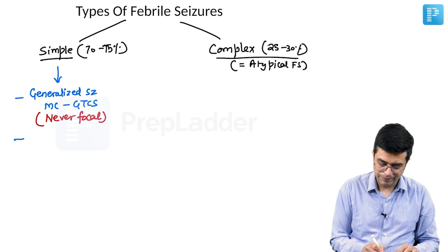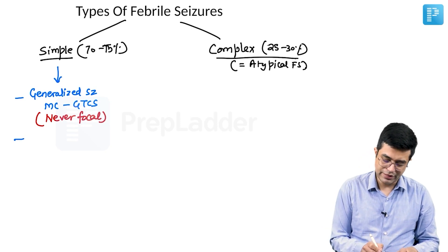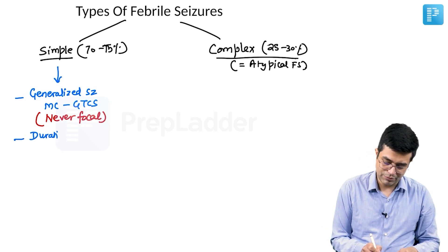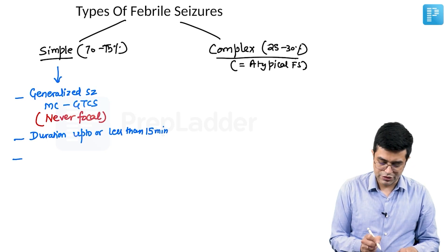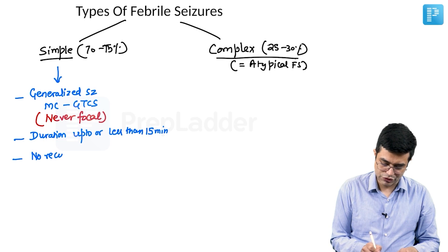The second feature is that the duration will be up to or less than 15 minutes — it will never exceed 15 minutes. The third feature is that there will be no recurrence of the seizure within 24 hours.